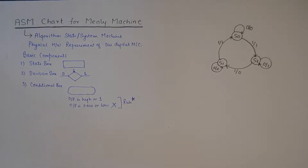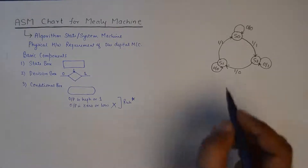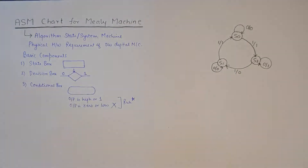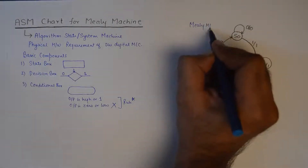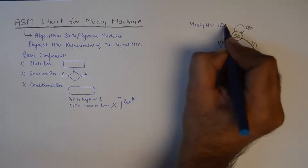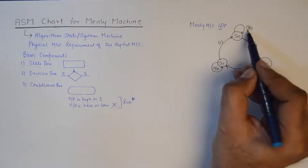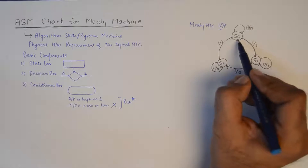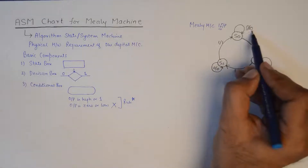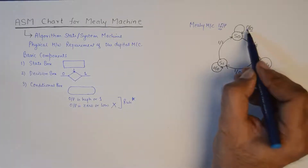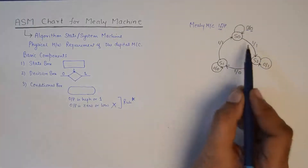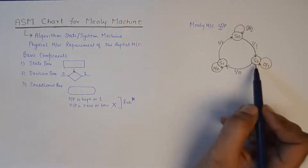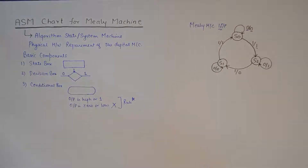Keeping these small rules in mind, it is very easy to draw the ASM chart from a state diagram. To illustrate that, I have a state transition diagram for a Mealy machine. This is a one-input Mealy machine — the input is given while we are at state S0, and the output is what we get while providing that input. When we give an input one, the output is also one and it transitions to state S2.